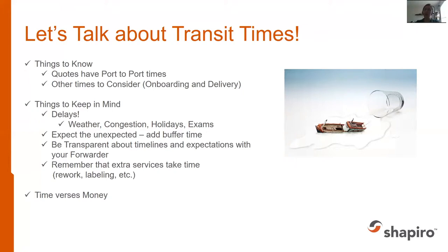In order to know what that buffer time should be, you need to make sure you're telling your forwarder what you're looking for in terms of timelines and expectations. It is crucial that they know that information. If you're trying to hit a window like Christmas, you want to start looking at shipping by at least September or October — no later than November. If you're looking to do an ocean shipment in November, you've probably already going to be too late. So the earlier, the better.